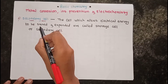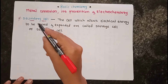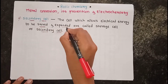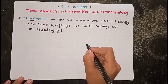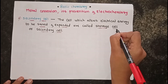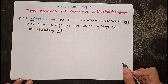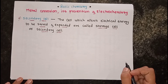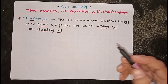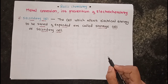The secondary cell is a cell that allows electrical energy to be stored and expended, which is why it is also called a storage cell. The electrical energy can be stored and then used again later. In these cells, the spent electrodes can be regenerated by passing electric current through the cell in the reverse direction.